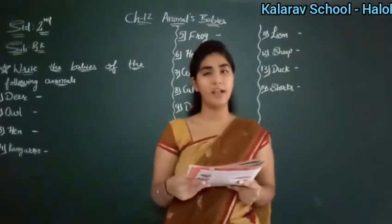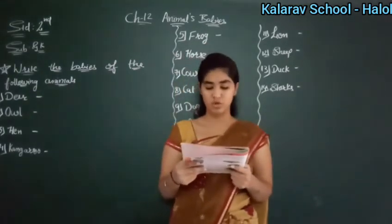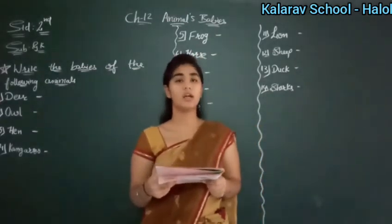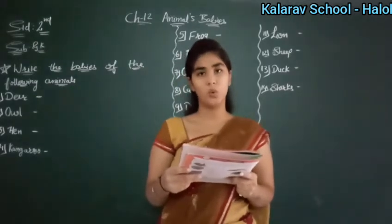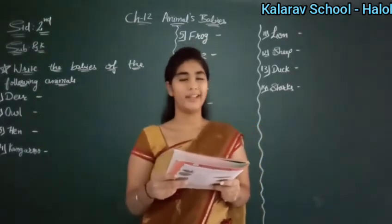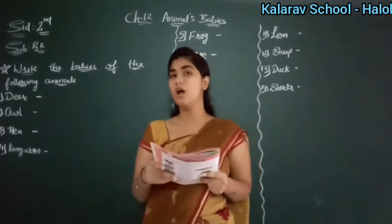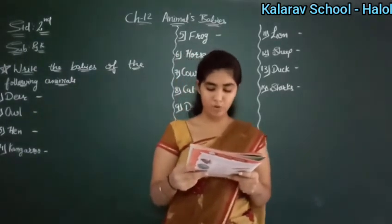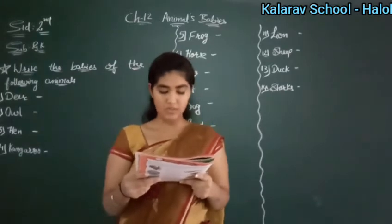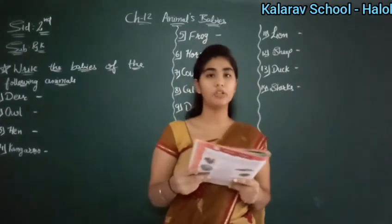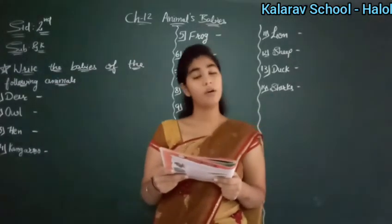Jab chick hote hain, wo bade hote hain. So chick — hen. Then: 'I am a joey now. I am sitting in my mom's pouch. I will grow up to become a kangaroo.' Kangaroo ke baby ko joey bolta hai. Now: 'I am a tadpole now. I will grow up to become a dash.' Tadpole frog ke baby ko bolta hai. So tadpole bada hoke frog banega. Horse ke baby ko colt bolta hai. Baby dogs and baby sharks are both called pups. Dog ke baby ko puppy bolta hai. Baby shark ko bhi hum pups hi bolte hain.